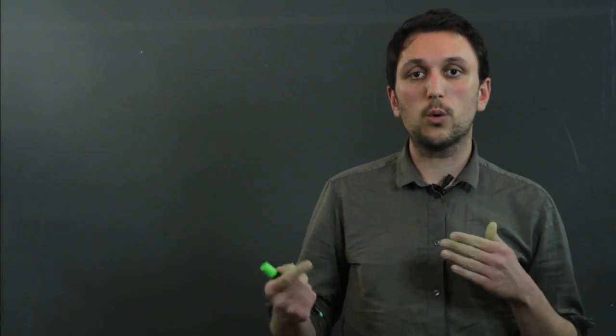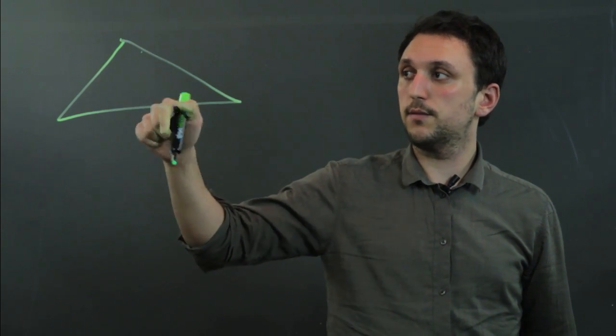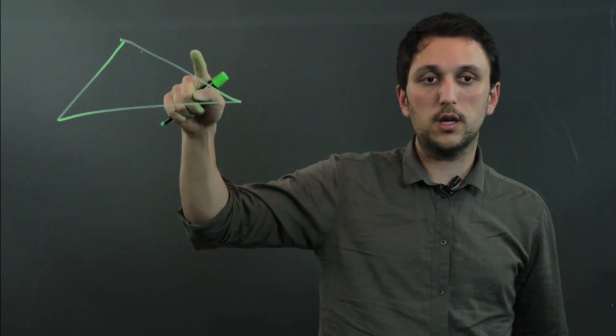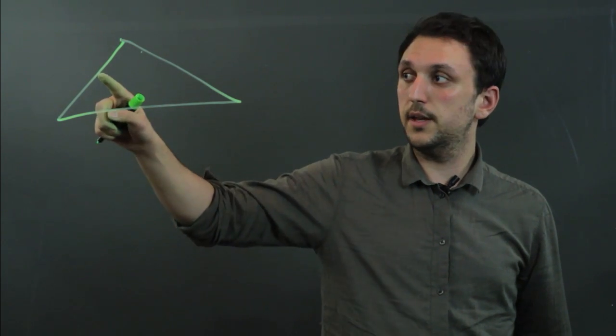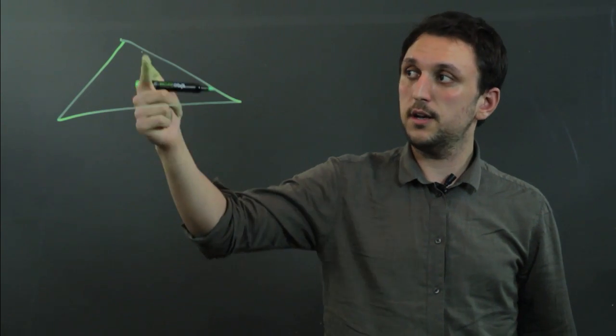So a scalene triangle is a triangle that has no equal sides or equal angles. For example, like this. Now if you said this was maybe three and five and seven, then none of the angles will be the same and obviously none of the side lengths.